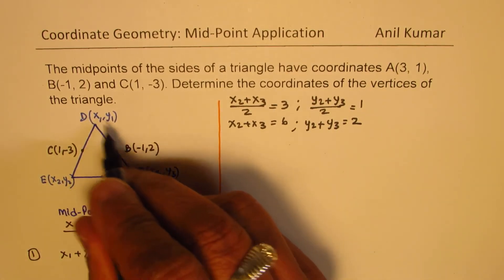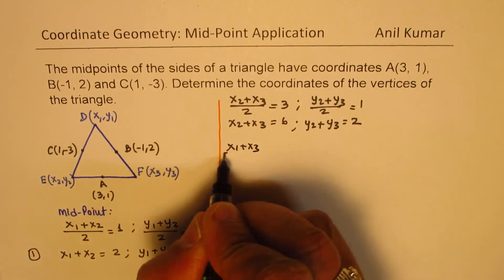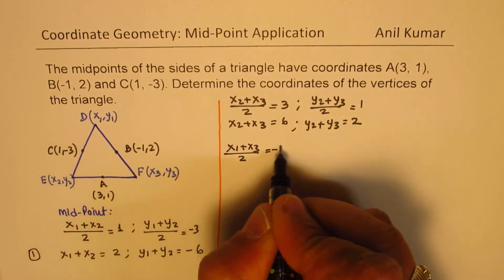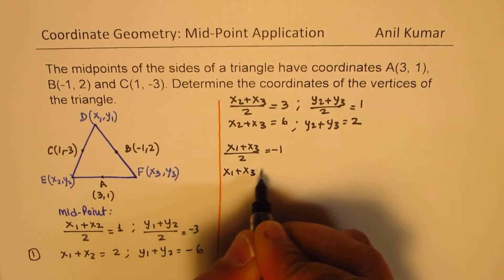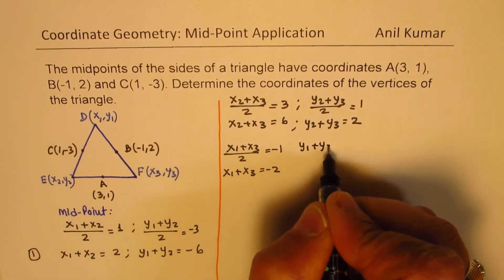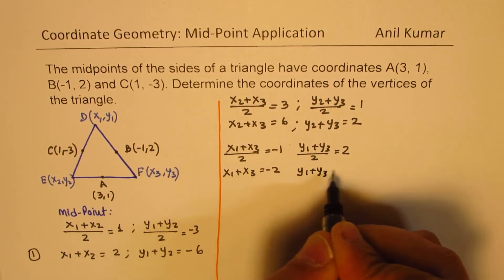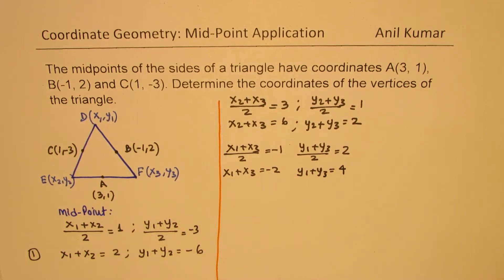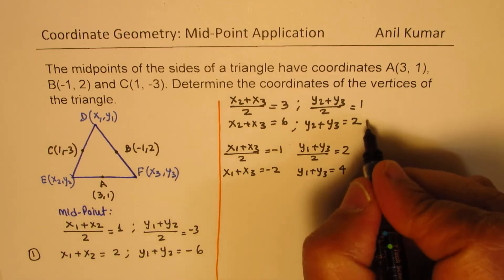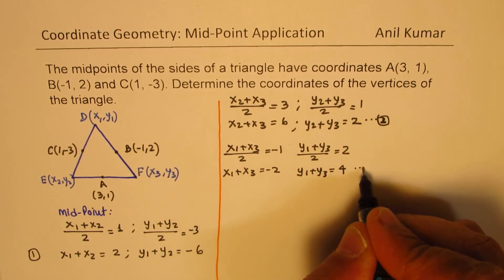And similarly x₁ and x₃. So we have (x₁+x₃)/2 is -1, x₁+x₃ is -2. And (y₁+y₃)/2 is 2, so y₁+y₃ is minus... y₁+y₃ is 4. So as you can see, we get these three equations which relate x₁, x₂, y₁, y₂, all these.